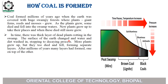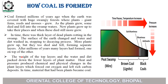The surface of the earth changed and water and dirt washed in, stopping the decaying process. More and more plants grew up, but they too died and fell, forming separate layers. After millions of years, many layers had formed, one on top of the other. The weight of the top layers and the water and dirt packed down the lower layers of plant matter. Heat and pressure produced chemical and physical changes in the plant layers, which forced out oxygen and left rich carbon deposits. In time, the material that had been plants became coal.